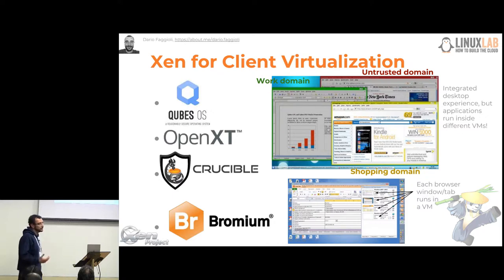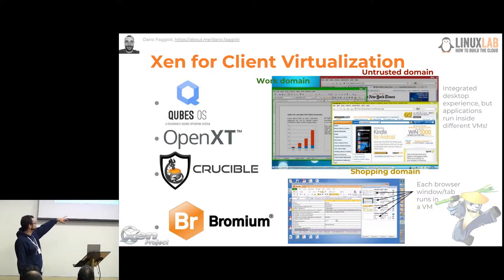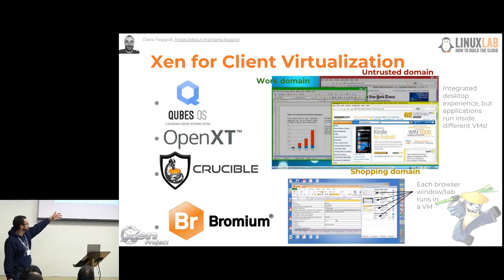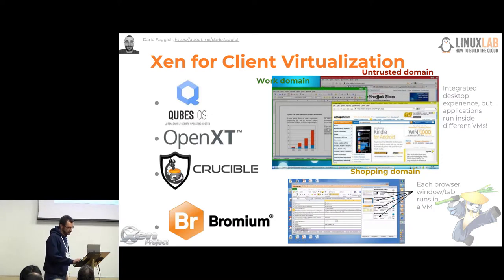There are quite a few virtual machines involved — not only the ones that implement the trust domains themselves, but also others involved to ensure that the isolation is actually strong enough. Another example is another product, Bromium, which is focused on Windows and offering a safe browsing experience. The concept is similar: each browser tab runs inside its own Xen virtual machine.